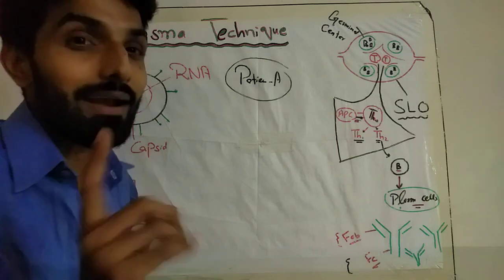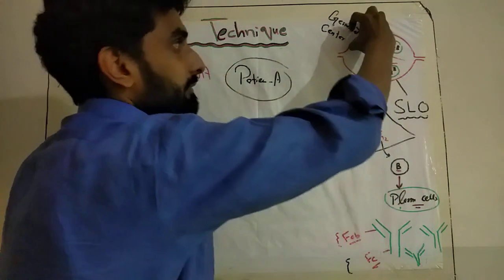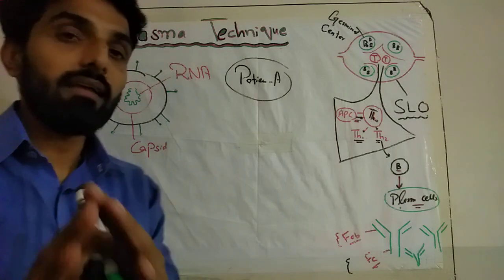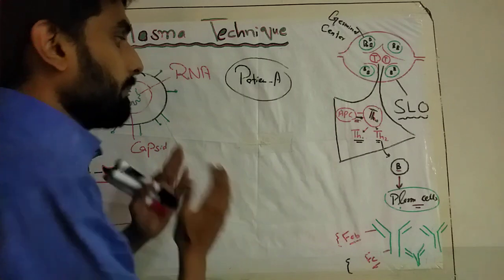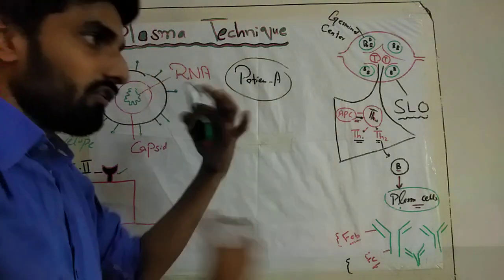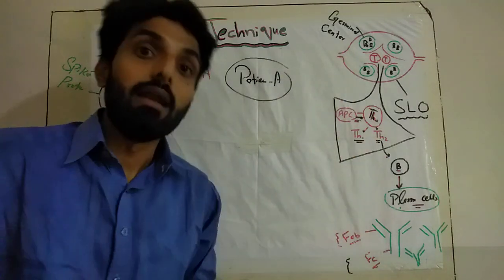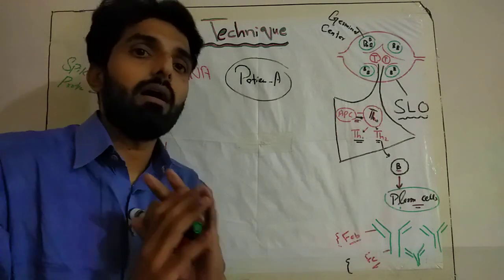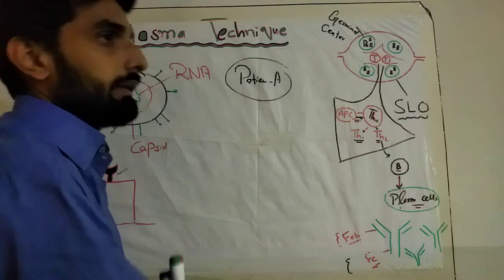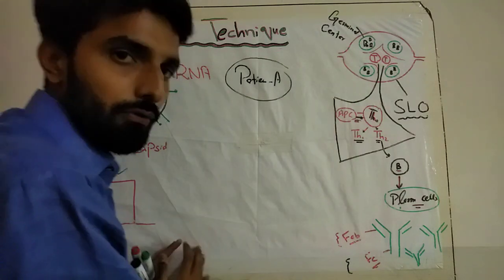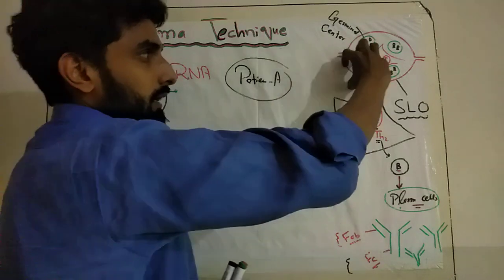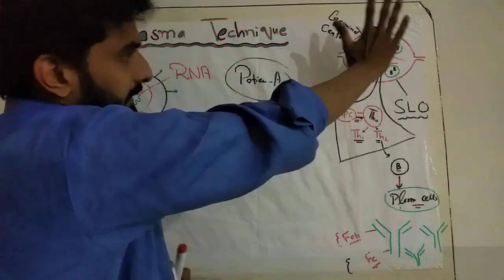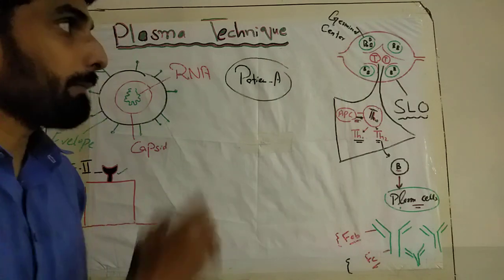These antigens are taken into the secondary lymphoid organs — the lymph node or spleen — where T lymphocytes and B lymphocytes are present. T lymphocytes are produced in the bone marrow, mature in the thymus, then travel to the lymph node where they reside and are activated by antigen-presenting cells. Similarly, B lymphocytes are produced in the bone marrow and reside in the germinal centers of the lymph node, where they remain inactive until presented with an antigen.